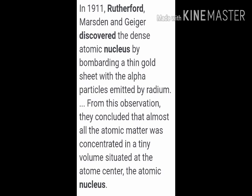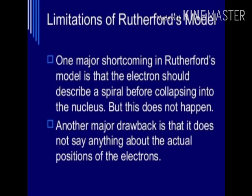Now, the limitations of Rutherford's experiment: one major shortcoming is that the electrons should describe a spiral before collapsing into the nucleus, but this actually does not happen. Another major drawback is that Rutherford's model does not say anything about the actual positions of the electrons — whether they are fixed or moving in orbits, as was shown in later discoveries.